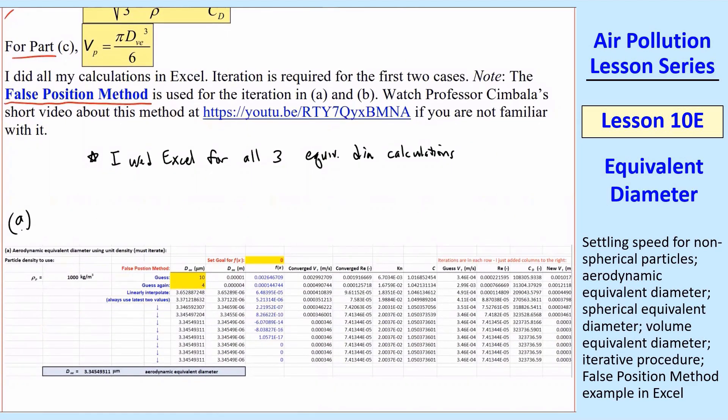I used Excel for all three equivalent diameter calculations. And here's some screenshots. Part A, I used ρₚ equal ρ₀. There's the thousand. And then I set up my false position method exactly the same way that I did in that YouTube video. These are the converged values of vₜ from far to the right, because as an intermediate step, I have to do that iteration, like I did in the previous lesson, to calculate vₜ. So in this case, I'm guessing some aerodynamic equivalent diameter. This is my first guess. And then I also have a second guess. These can be anything reasonable. And the way this method works is from there on, I'm linearly interpolating between the two previous values. And you can see how quickly it converges. The way I have the equation set up, the goal is to get this f(x) to be 0. And it starts out 0.0026. Then it quickly gets smaller and smaller. It's 10⁻⁶ by the fourth line there. And it very quickly goes to 0.